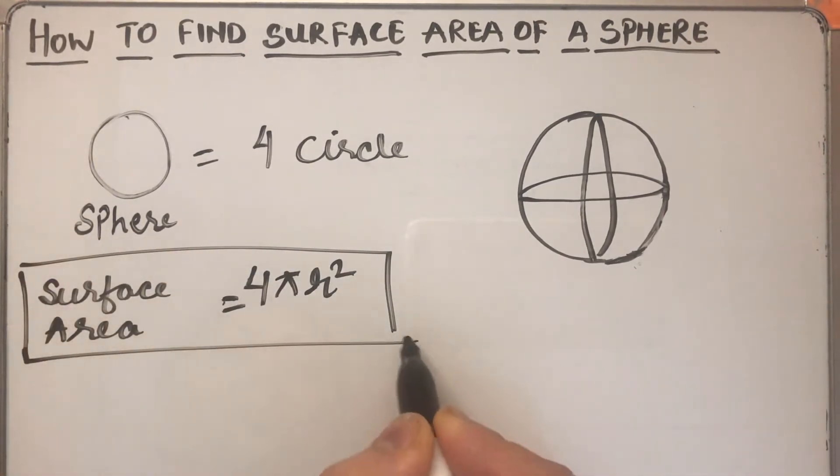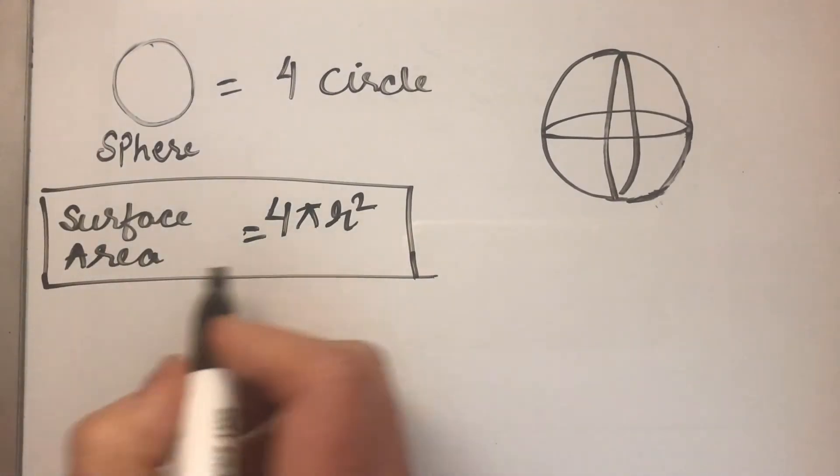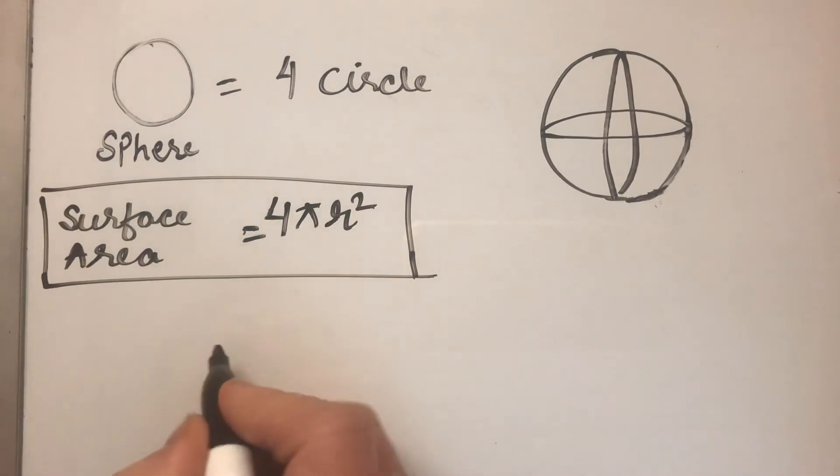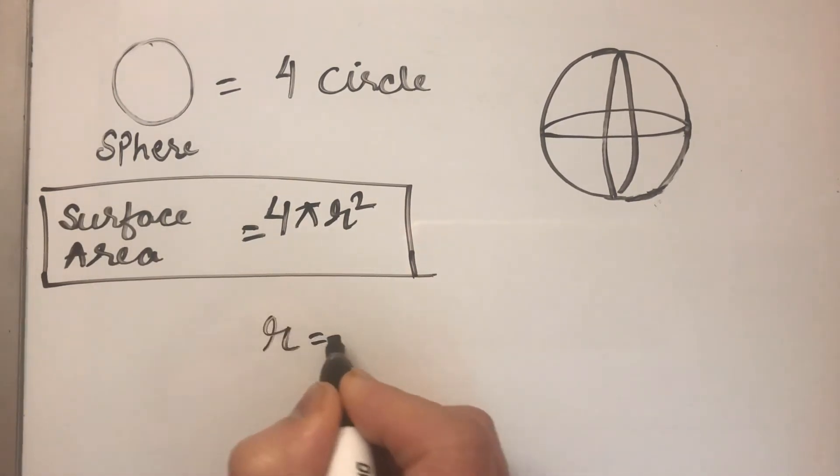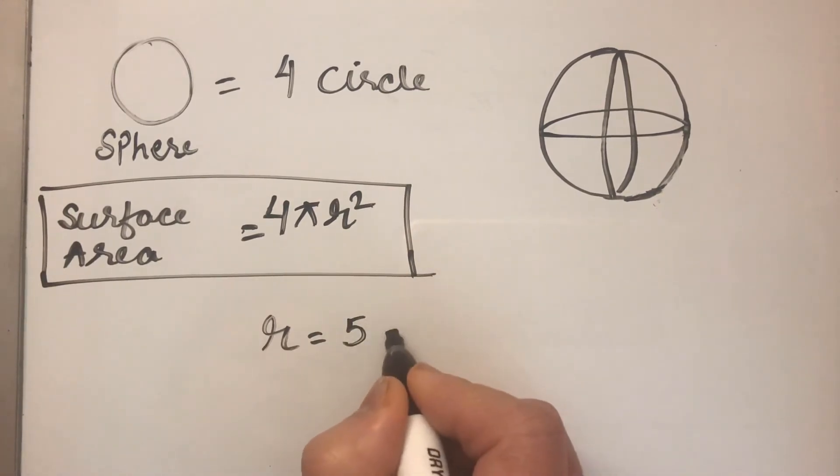If we want to find the surface area of the sphere, it is very easy. We just need to know the radius of the sphere. Suppose we take an example where the radius is 5 centimeters.